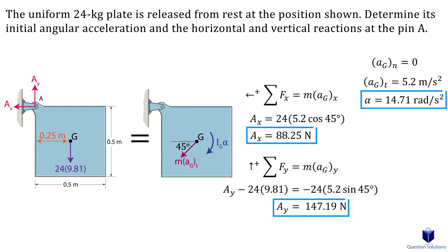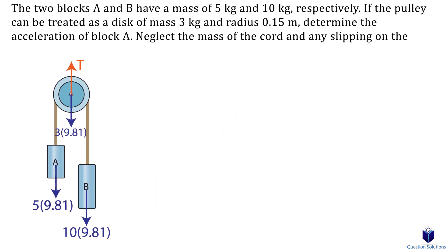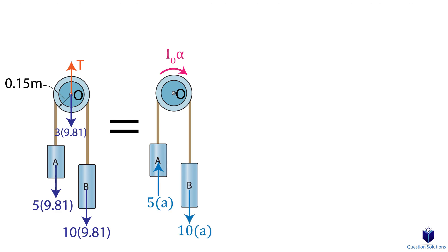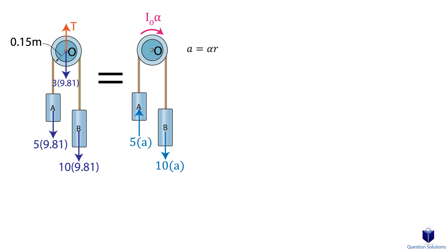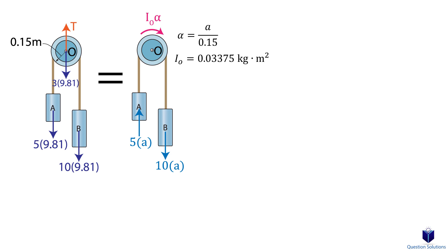Now let's look at a pulley problem where we need to find the acceleration of block A. We draw a free body diagram showing tension at O, weights of blocks A and B, and the weight of the pulley. The kinetic diagram shows the moment about O and mass times accelerations of blocks A and B. The acceleration of the pulley equals angular acceleration times the pulley radius, so we isolate for angular acceleration. Since the pulley can be treated as a disk, we use the disk formula for mass moment of inertia, plugging in the pulley's mass and radius.